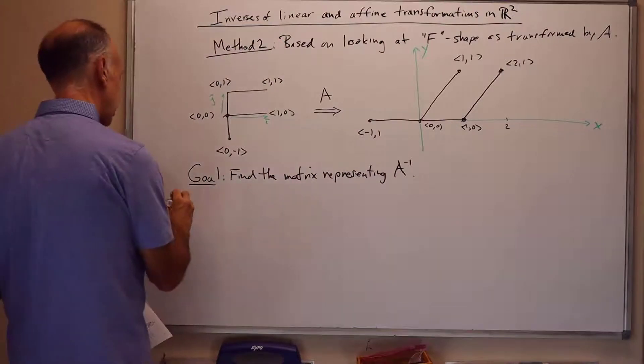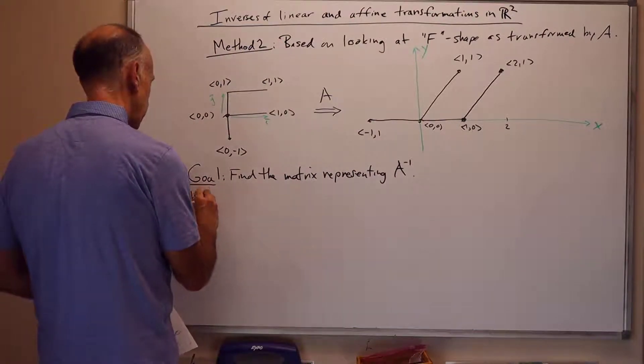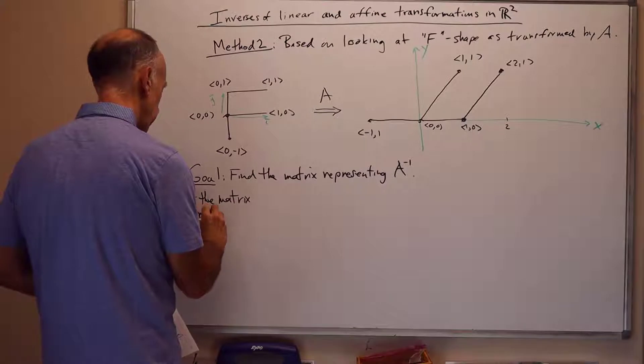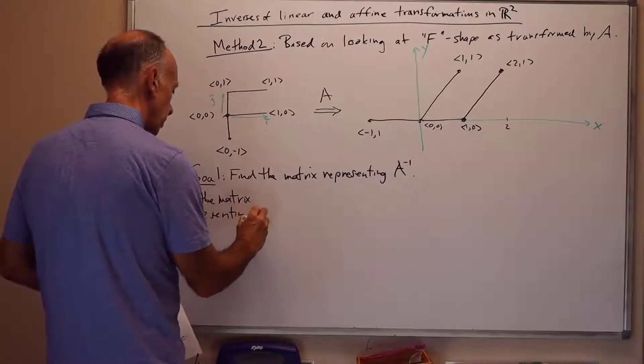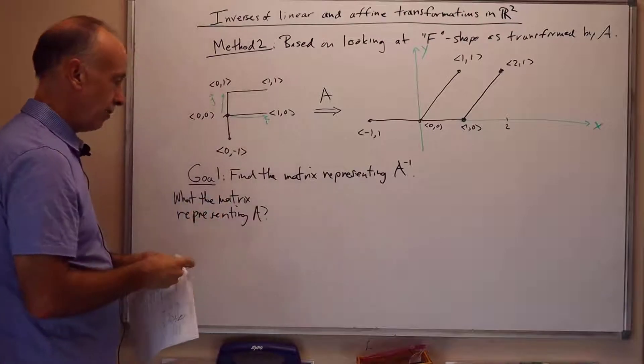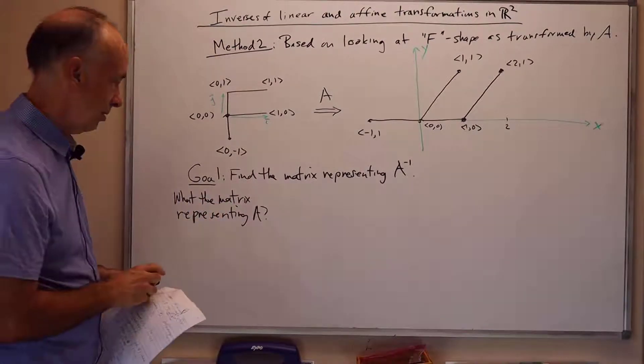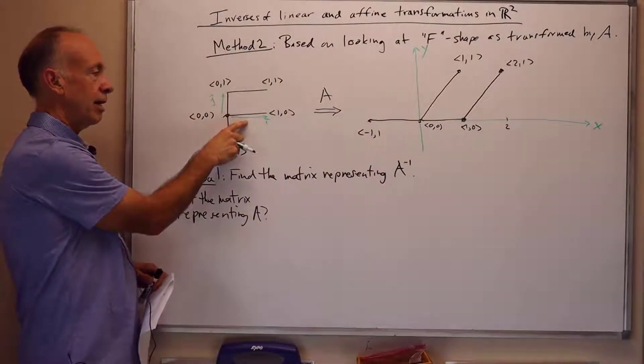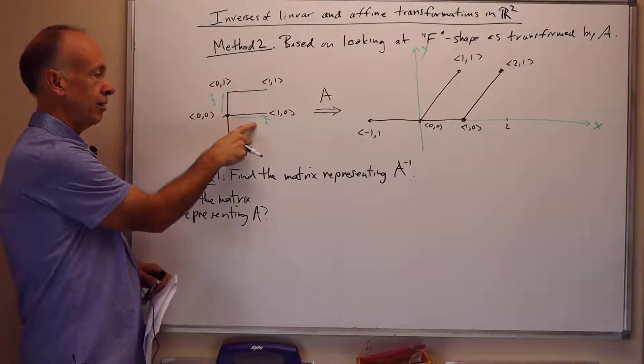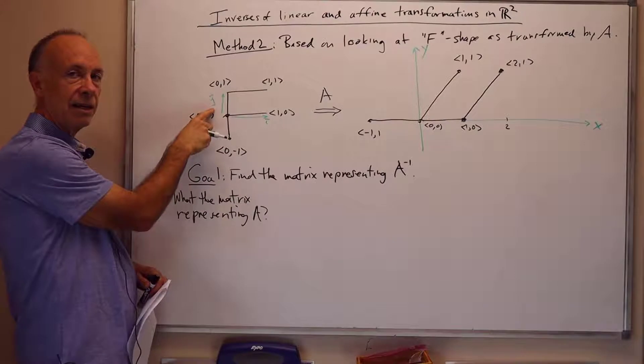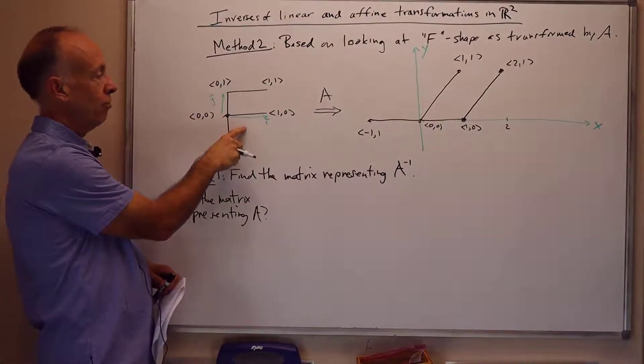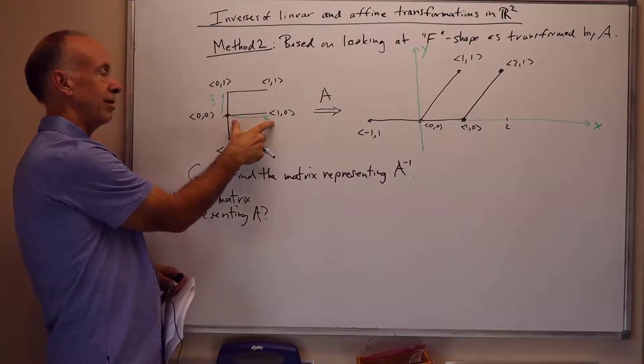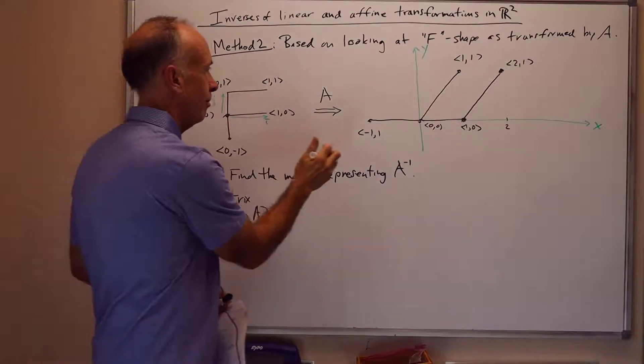Okay. It's not really necessary, but just for fun, let's look at what is the matrix representing A. Again, for what I'm doing to find the matrix representing A inverse, I won't really need this, but let's do it anyway. For this, we look at the unit vector i in the domain, and the unit vector j also in the domain, and look at how they're transformed by A. i here is the vector 1,0. We think of it rooted at 0,0, and its head at 1,0. So, this is the middle arm of the F.